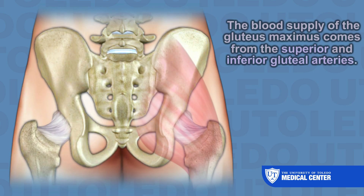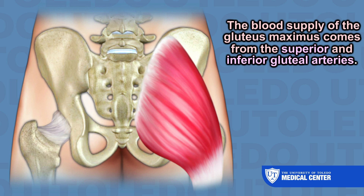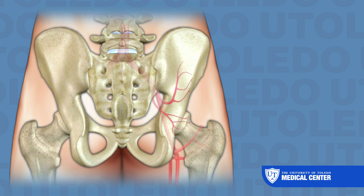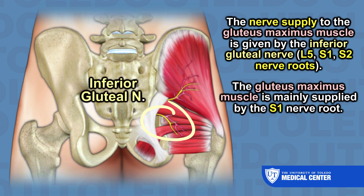The blood supply of the gluteus maximus comes from the superior and inferior gluteal arteries. The nerve supply to the gluteus maximus muscle is given by the inferior gluteal nerve, L5, S1, S2 nerve roots. The gluteus maximus muscle is mainly supplied by the S1 nerve root.